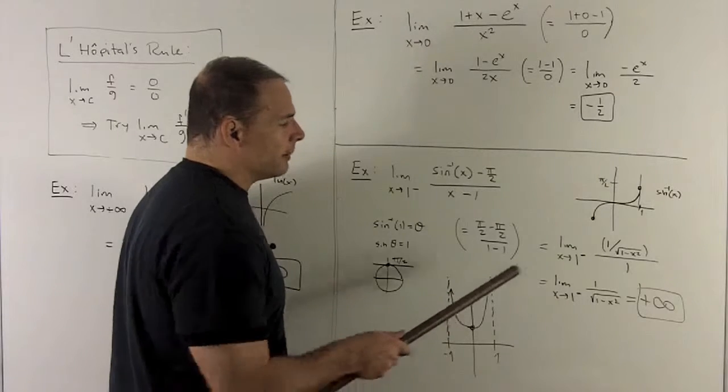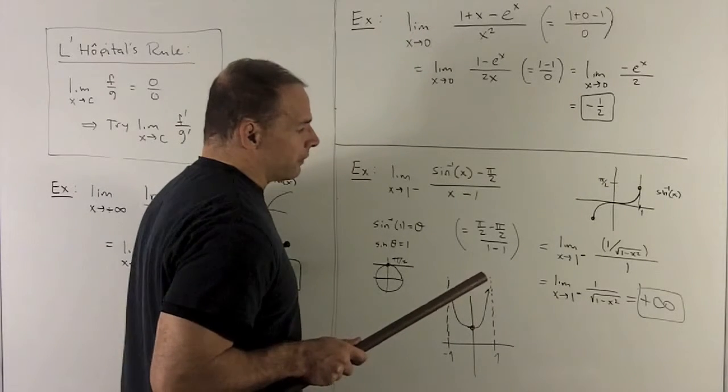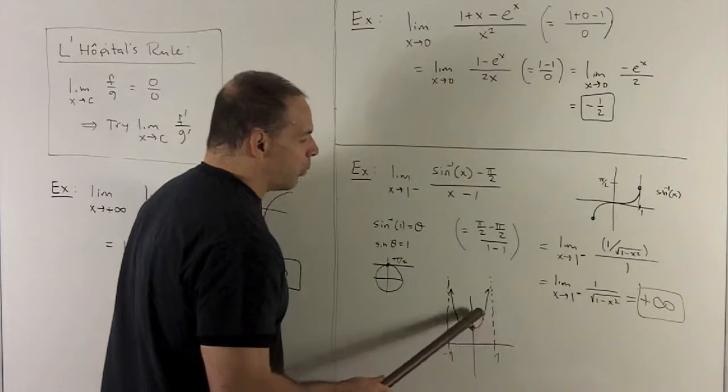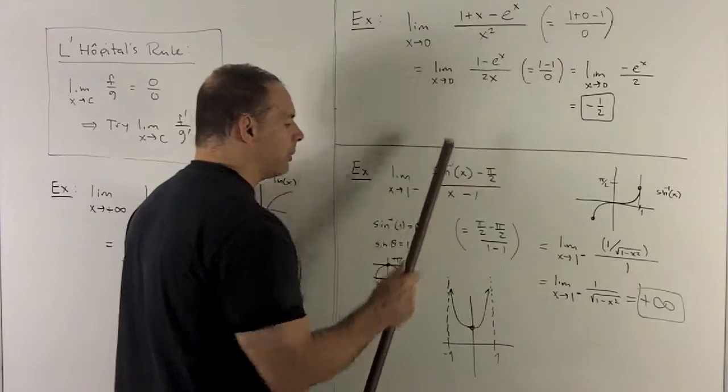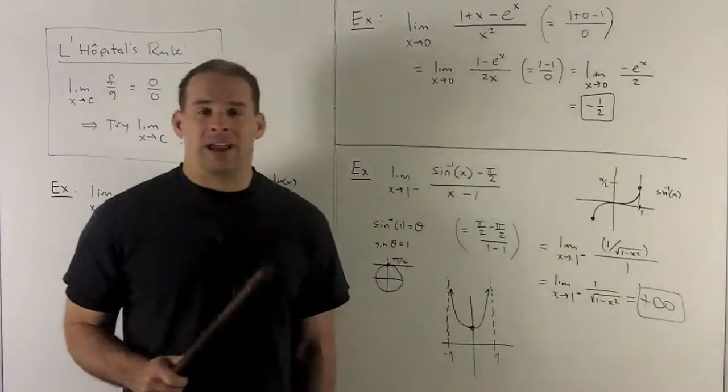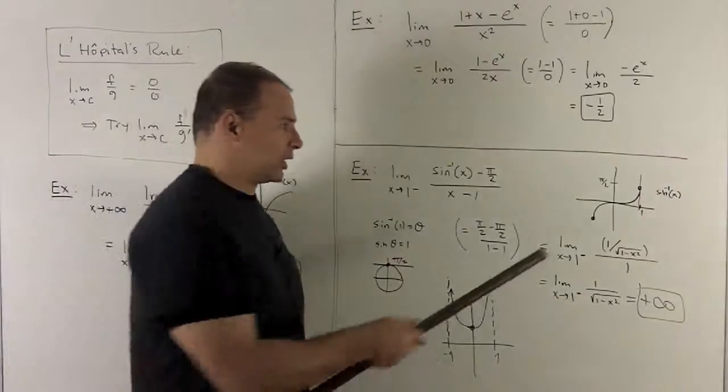As I take the limit for this function as we go to 1 from the left, we're going this way. As I go this way, the y values are shooting up. So I'm going to expect that we go to plus infinity. And that agrees with our guess by looking at the graph.